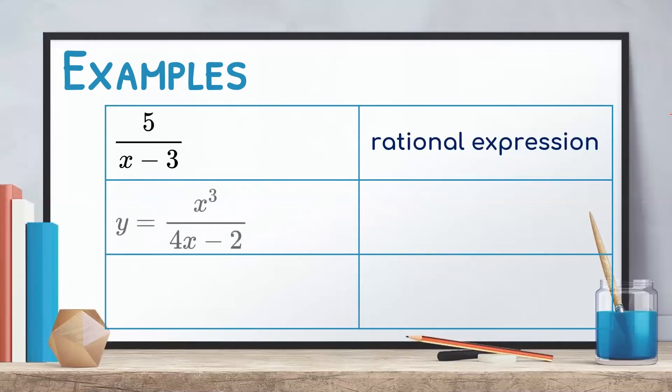How about the second one? y equals x cubed over 4x minus 2. Notice that there is a rational expression, and it is equated to y. Therefore, this is a rational function.